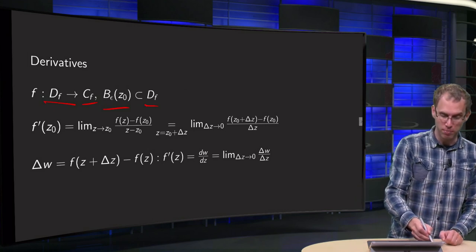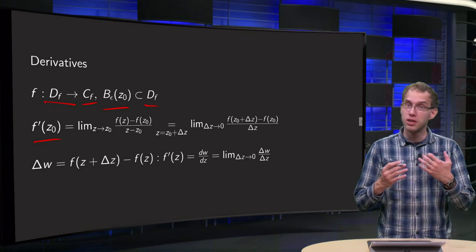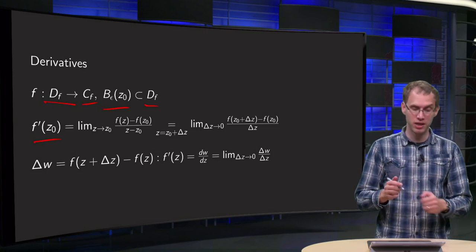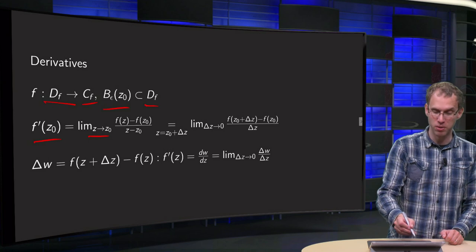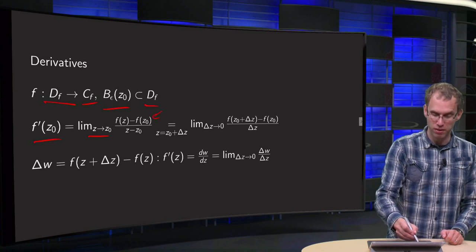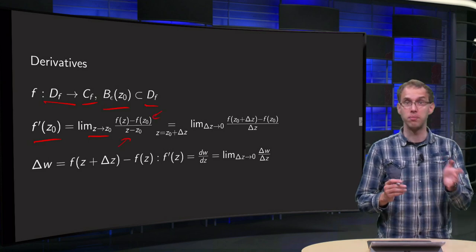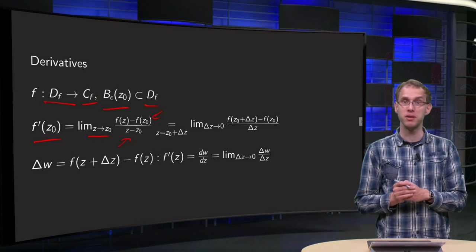So what do we do? f prime z0 is the same as in the real case. You take limit z to z0 and you have delta f divided by delta z, or f(z) minus f(z0) divided by z minus z0.